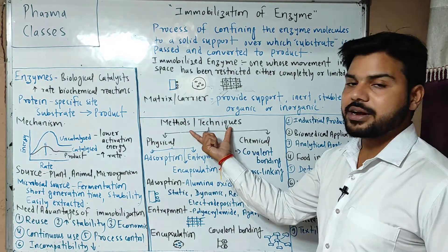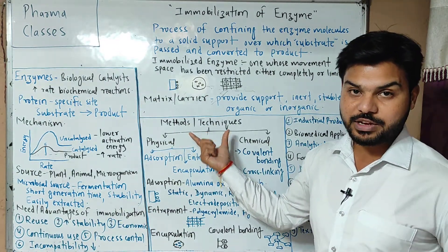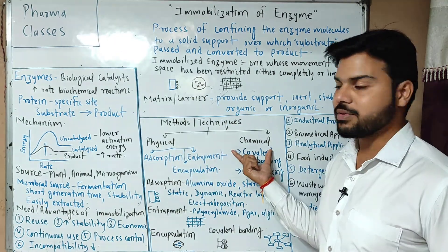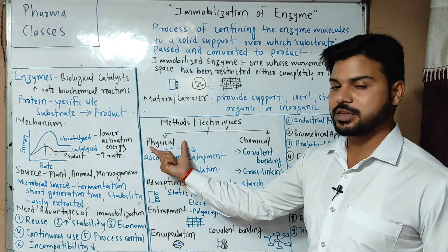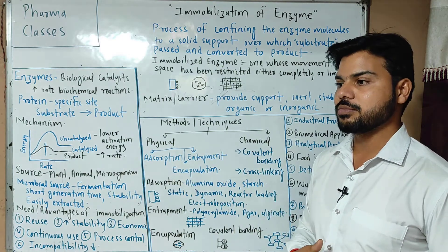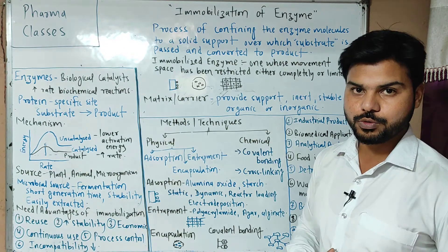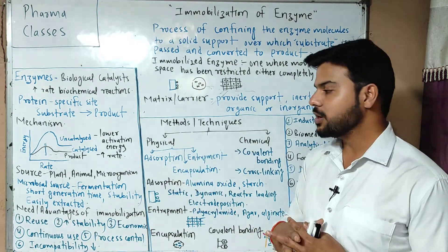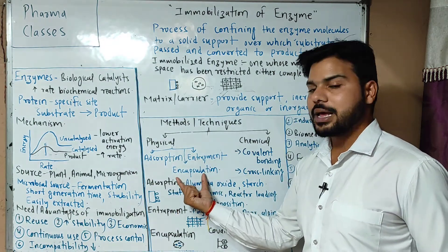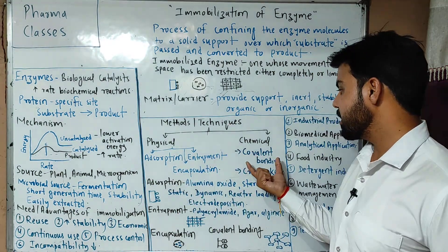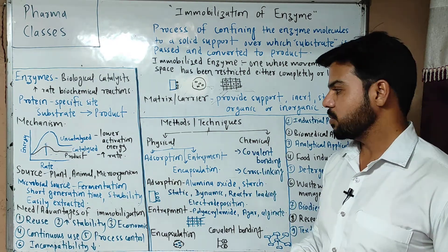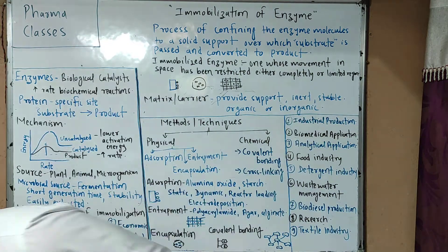Now we talk about the methods and techniques of enzyme immobilization. There are physical and chemical techniques. Physical techniques involve physical bonds — ionic bonding or van der Waals attractive forces — where enzymes are attached to a solid surface. The three physical processes are adsorption, entrapment, and encapsulation. Chemical methods involve covalent bonding and cross-linking.